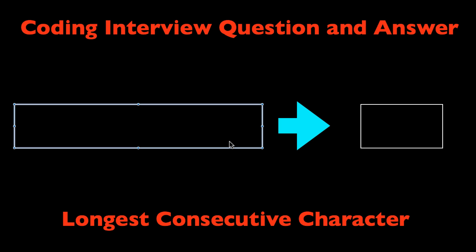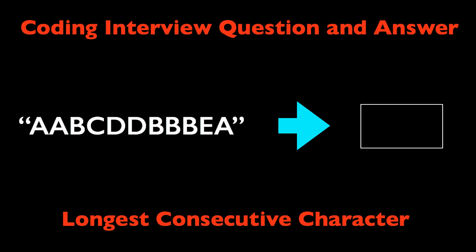You're given a sequence of characters, or a string, and the problem here is writing a function that takes this string as the input and finds the longest subsequence within the string consisting of a single character. In this particular example, that's BBB right here, which is longer than AA or DD for example.